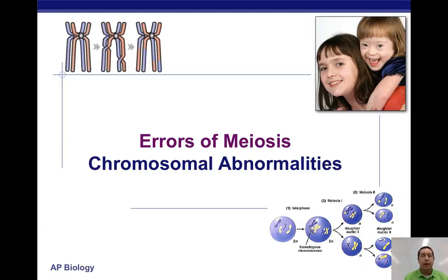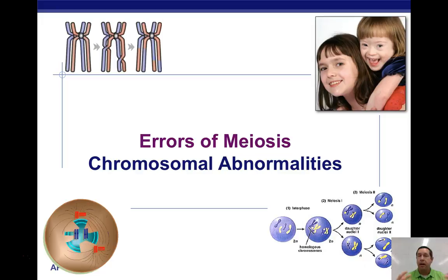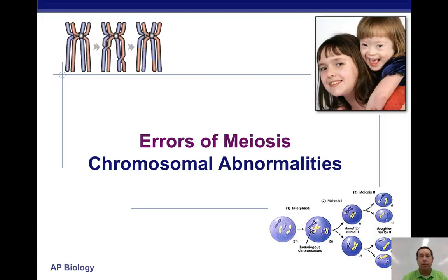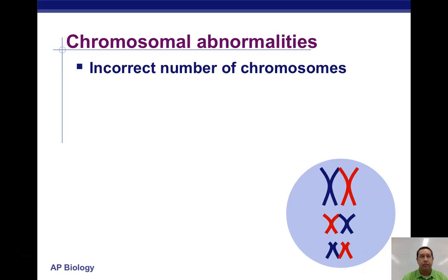In this video we're going to talk about some errors that are associated with meiosis that lead to problems with chromosomes. One of the main problems would be having the wrong number of chromosomes.